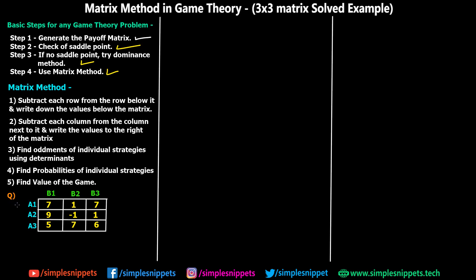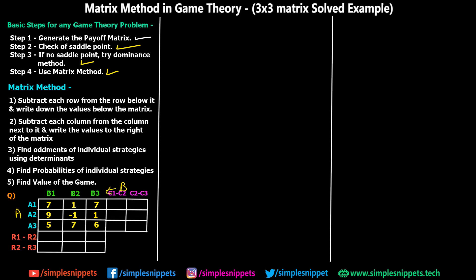Our question has player A with strategies A1, A2, A3 and player B with strategies B1, B2, B3. For step 1, we perform R1 minus R2 and R2 minus R3. So we take the A1 row minus A2: that is 7 minus 9, 1 minus (−1), and 7 minus 1, and write those values below the matrix. We also do R2 minus R3: 9 minus 5, −1 minus 7, and 1 minus 6.